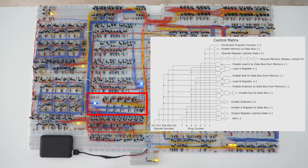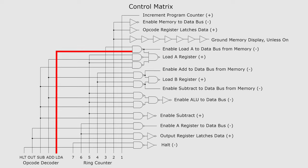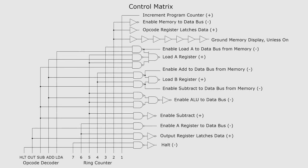The control matrix uses the opcode decoder and ring counter to determine when to enable circuits. Some circuits are enabled with a high signal, noted with a plus sign. Other circuits are enabled with a low signal, which is ground, noted with a negative sign. When the opcode decoder has load A on and the ring counter goes to 3, both inputs into the top NAND gate are on. This turns the top NAND gate off, which enables the load A value to be sent to the data bus from memory. Since the top NAND gate is off, it also turns the 3-input NAND gate on, which sends the load A register command. The result is that the A register latches in the load A value. Most of the other control matrix circuits work in a similar way.